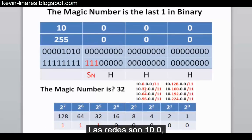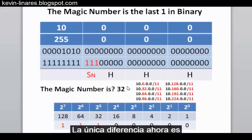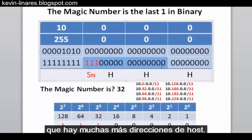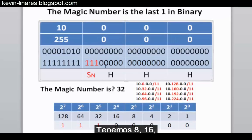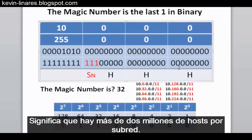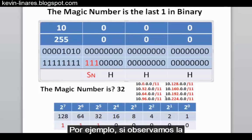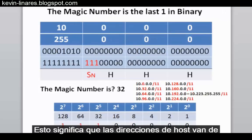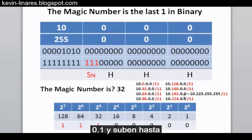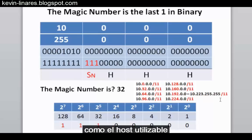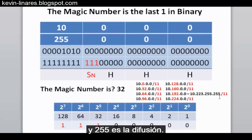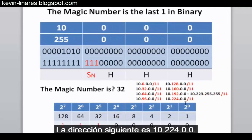The networks go up by 32 — 10.0, 10.32, 10.64, 10.96 — incrementing by 32 in the second octet. The difference now is we have many more host addresses: 8+16+21 = 21 zeros for hosts, meaning over 2 million hosts per subnet. For example, the 10.192.0.0 subnet's host range goes from 10.192.0.1 all the way to 10.223.255.254, with 10.223.255.255 as the broadcast. The next subnet is 10.224.0.0 — all slash 11.